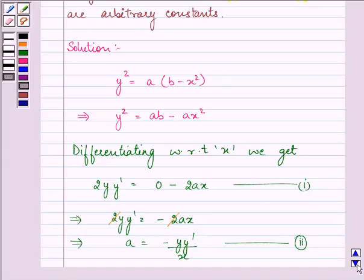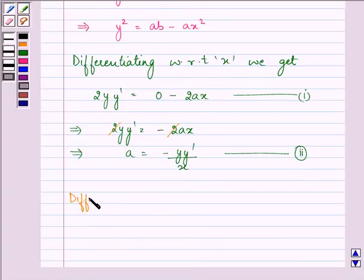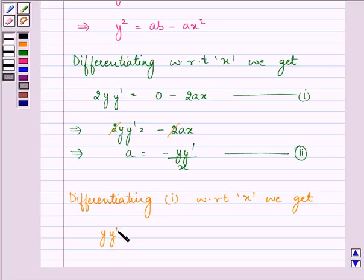Now, differentiating equation one with respect to x, we get yy'' + (y')² = -a. Let this be equation three.